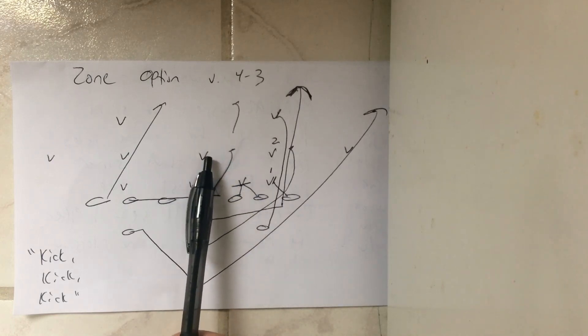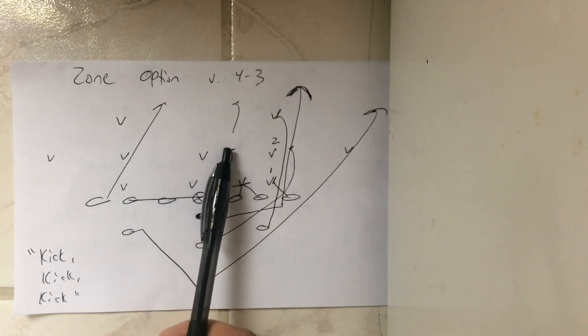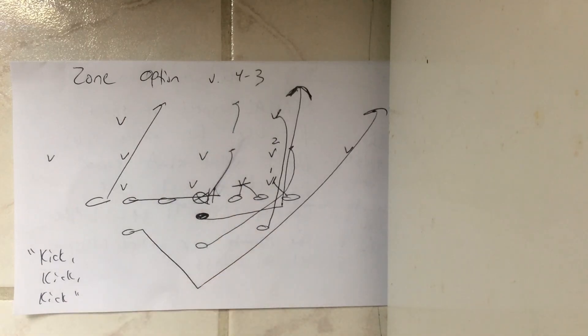The deuce call tells the center to veer play side and get his left knee through the crotch to Mike. Mike gets over the top of him. He doesn't chase him. He replaces him and blocks the free safety.